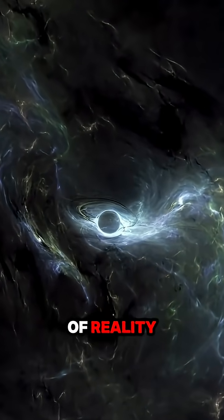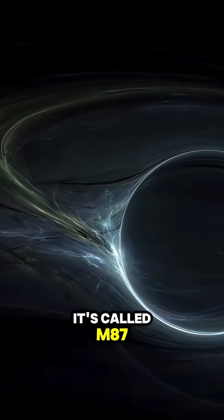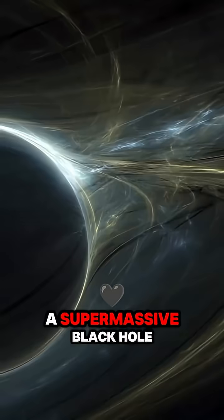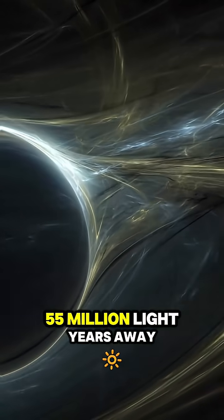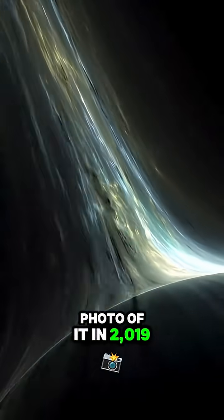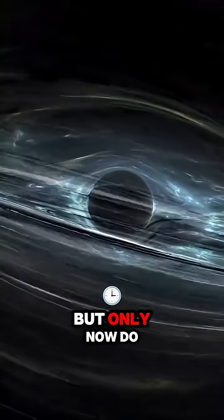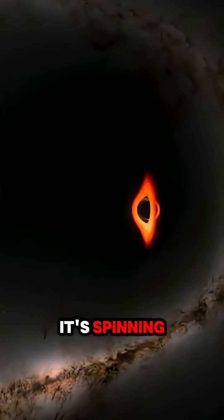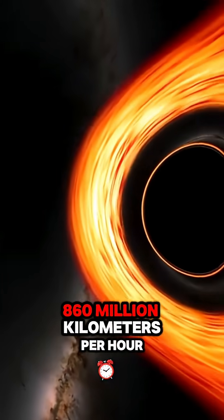It's called M87, a supermassive black hole 55 million light years away. We took the first photo of it in 2019, but only now do we know how fast it's spinning: 860 million kilometers per hour.